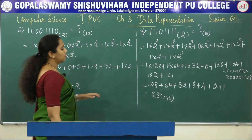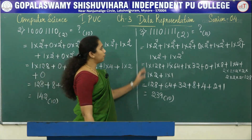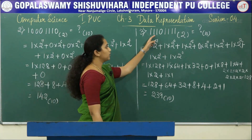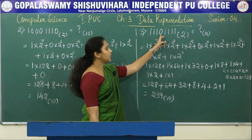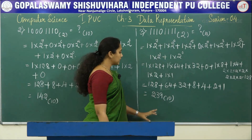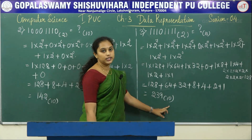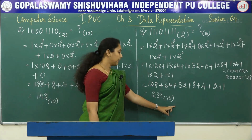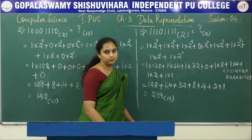The decimal equivalent of 11101111 base 2 is 239 base 10.